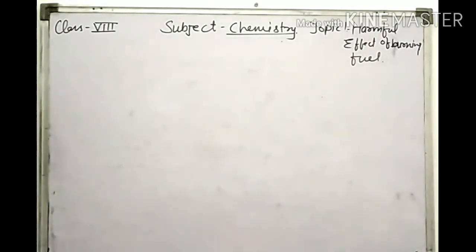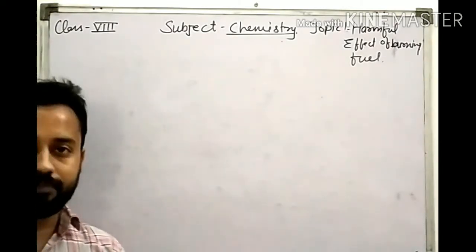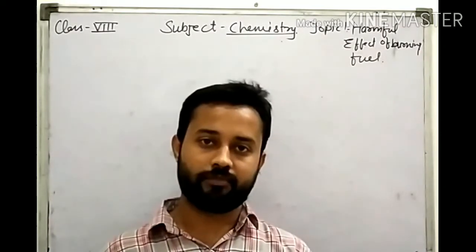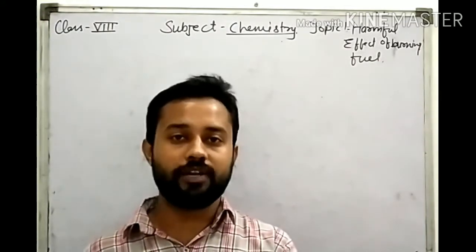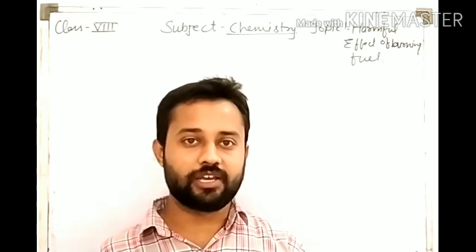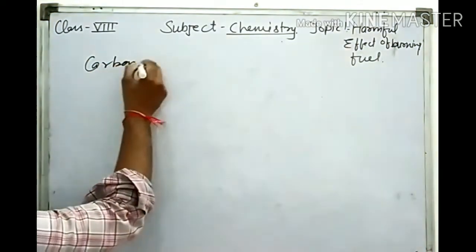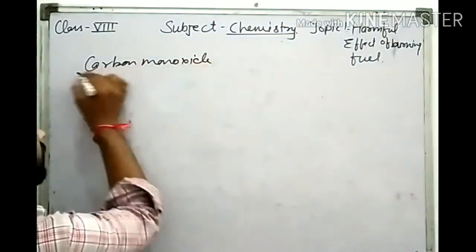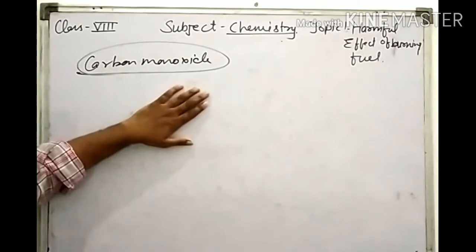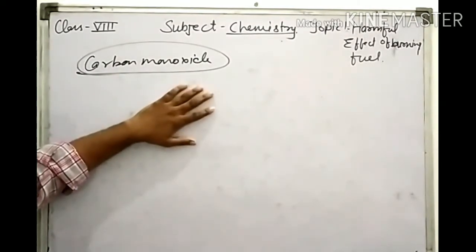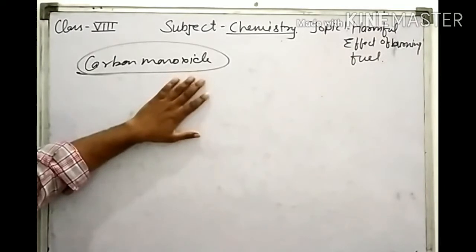Another concern is that when there is incomplete combustion due to insufficient oxygen, harmful gases are released. For example, carbon monoxide is a very poisonous gas, and it is produced only when a substance undergoes incomplete combustion. When we are burning any carbon-based fuel and oxygen is in insufficient amount, complete combustion does not happen, which causes a poisonous gas — carbon monoxide — to be released.